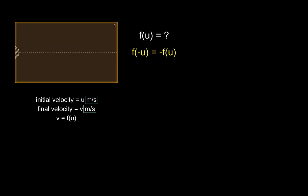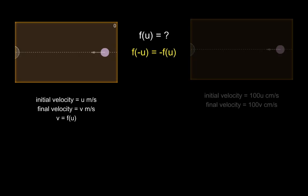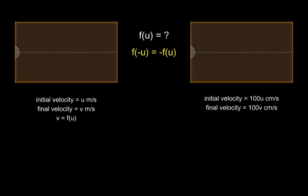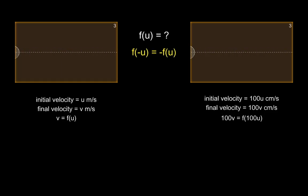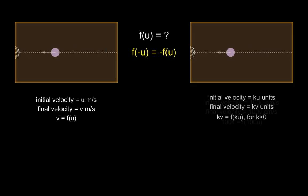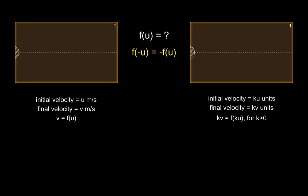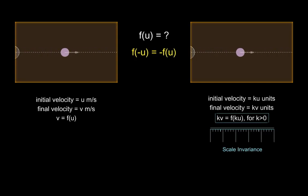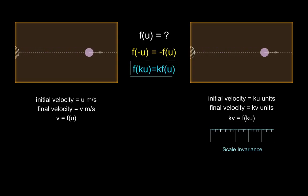Notice how the arguments and results of f do not include units, only the values of initial and final velocities. But what if we change the units from meters per second to centimeters per second? The initial and final velocities would then be 100u and 100v. The laws of physics remain the same irrespective of units, so the same law f applies: f of 100u equals 100v. Since we can switch to any arbitrary units, we can put any factor k greater than 0 instead of 100. This is our second postulate — scale invariance. We can use this to show f of k equals k times f of 1, pinning f down to linear functions passing through the origin.